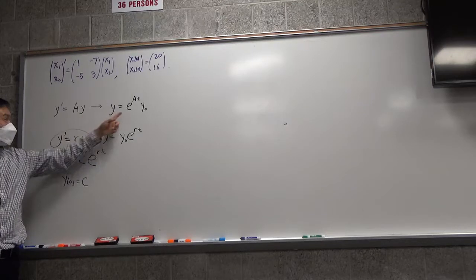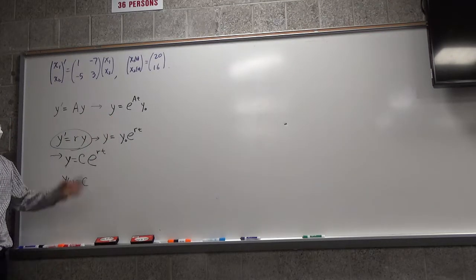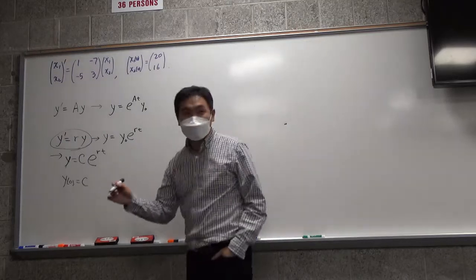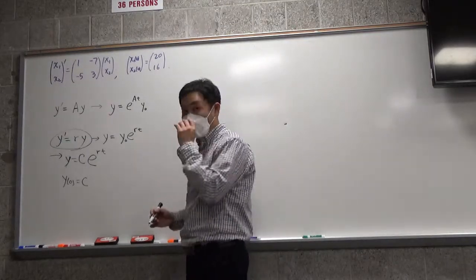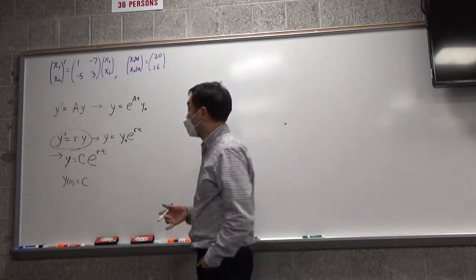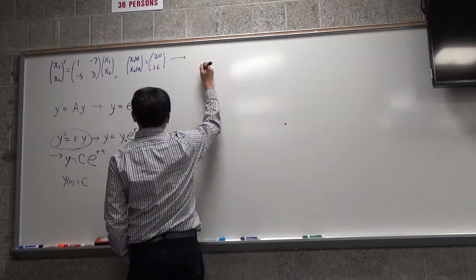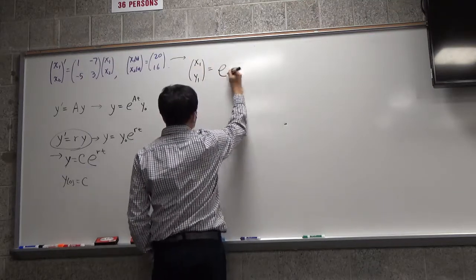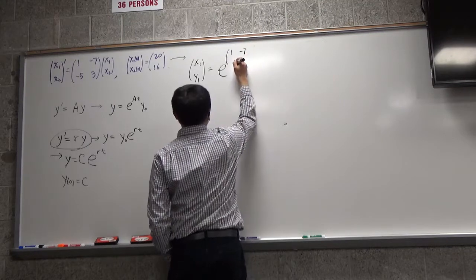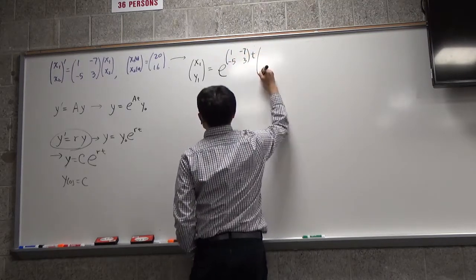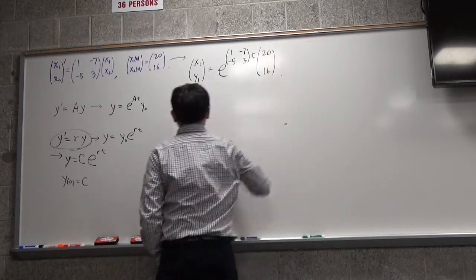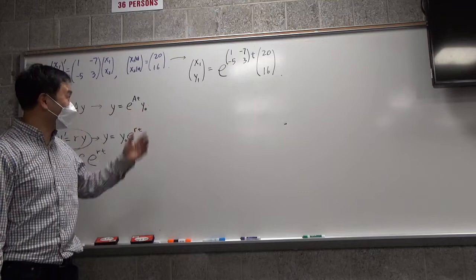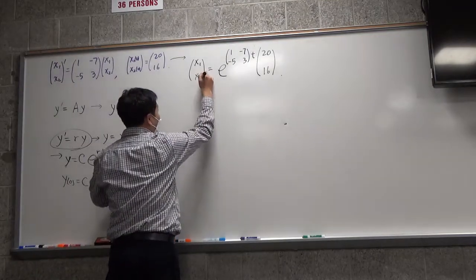So apart from that, I'm claiming that the way you solve a scalar equation is exactly the same as taking the exponential of At and multiplying by y₀. Immediately you run into a question. The solution of this system is just e raised to the matrix [1, -7; -5, 3] times t, times the initial value — done. That's the solution, right?